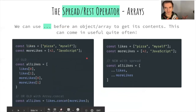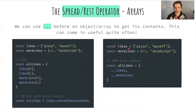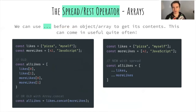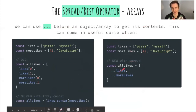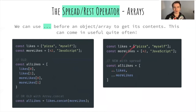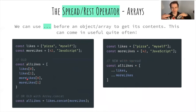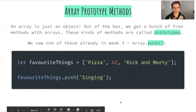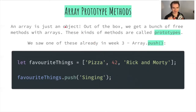The spread operator works for arrays too. To combine two arrays — `likes` and `moreLikes` — you can write `[...likes, ...moreLikes]`, which gives you a new array with all elements of both. This is much simpler than looping over one array and pushing items into another.